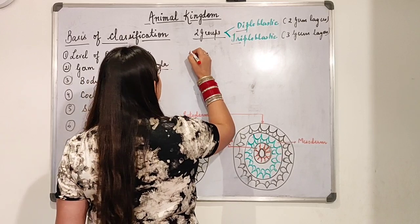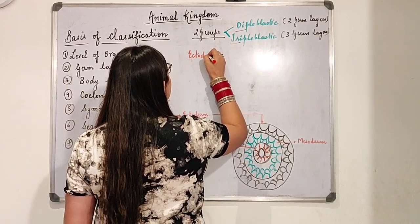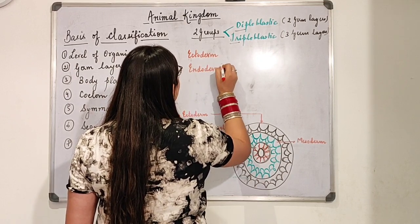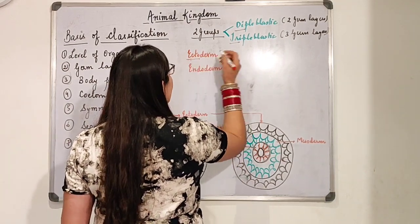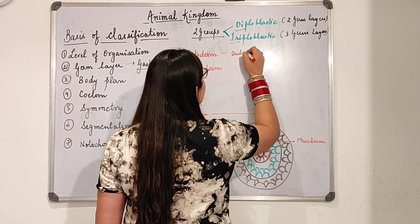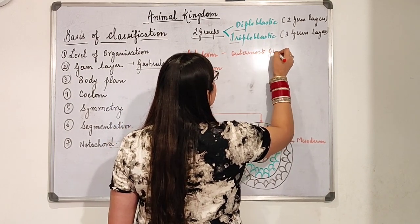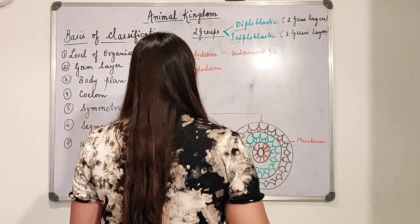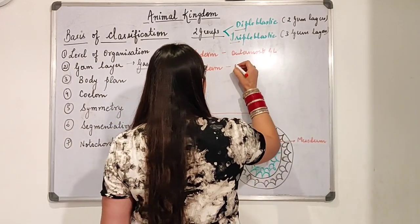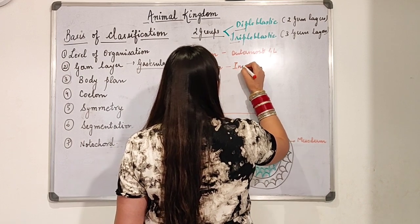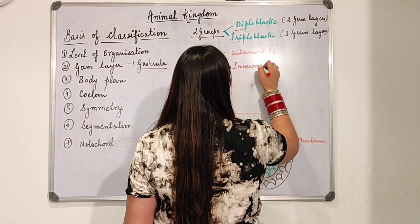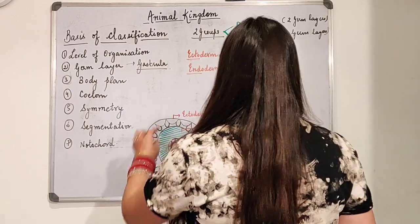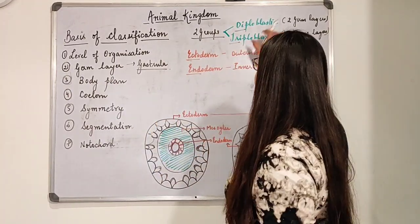The first layer is the ectoderm, and then comes the endoderm. 'Ecto' means outer, so ectoderm is the outermost germ layer. 'Endo' means inner, so endoderm is the innermost germ layer. Ectoderm and endoderm are common in both diploblastic and triploblastic organisms.